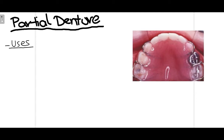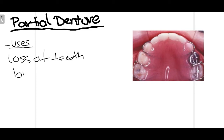Now many of you are aware of what a partial denture is. A partial denture is used when more than one tooth is lost in the dentition. When more than one tooth is lost bilaterally in the posterior segment, we use a partial denture. Unlike band and loop which was unilateral, partial denture is used bilaterally. One more advantage of partial denture is that it provides occlusal support as well, for example in mastication, which was not the case with the band and loop.